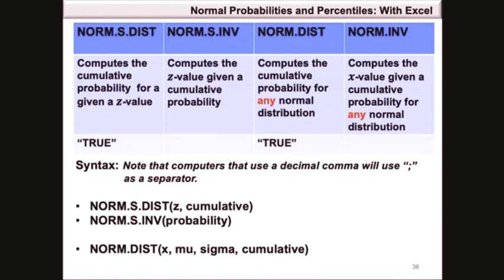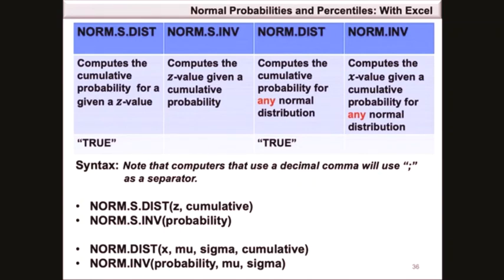norm.s.inv simply requires the probability associated with the standard normal distribution and computes the z value. norm.inv requires the probability of the area covered, the population mean, and the population standard deviation, and returns the x value for the normal probability distribution.